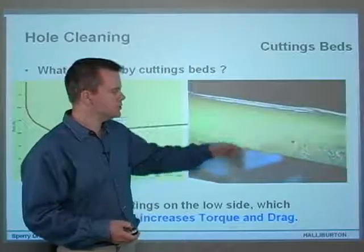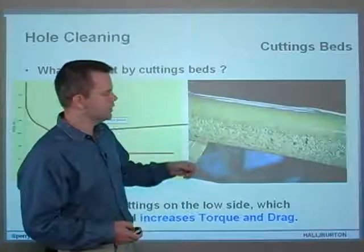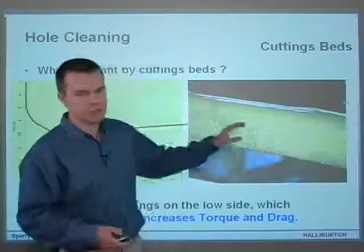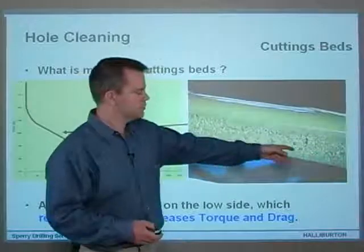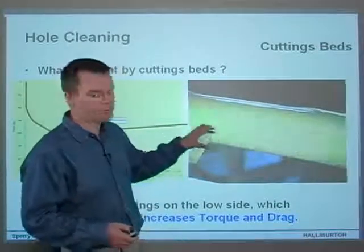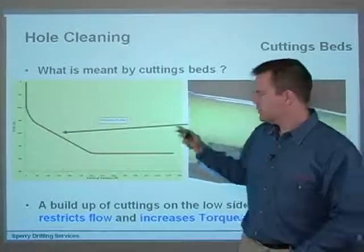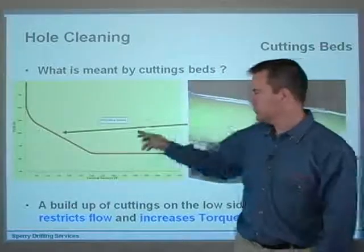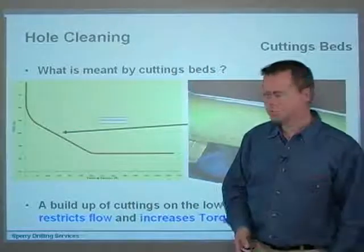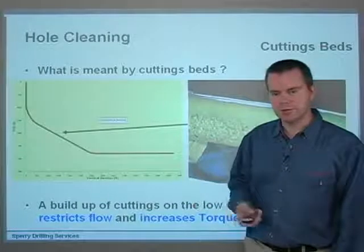We've got a perspex tube here, about five inches in diameter, with a rotating pipe on the inside about two and a half to three inches in diameter. These are limestone cuttings of various sizes being injected at the bottom, and you can see bed formation. The bed is forming on the low side of the wellbore, which is inclined — we're looking at approximately 65 degrees. Basically, a cuttings bed is a buildup of cuttings on the low side of the hole.